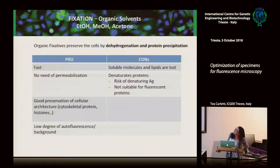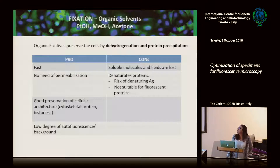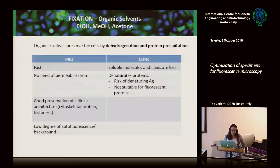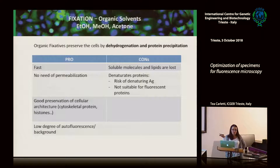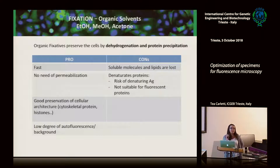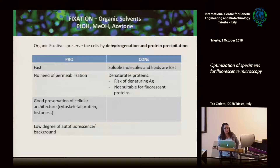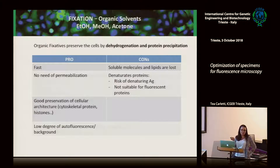The other kind of fixation is with organic solvents: ethanol, methanol, acetone. The advantage is that it is very fast — probably faster than aldehyde/PFA. It does not need permeabilization because it works by dehydration and protein precipitation and it removes most lipids. So you don't need to permeabilize after this type of fixation, saving time. It gives good preservation of cell architecture and is the best method for studying cytoskeleton or histones — large structures.